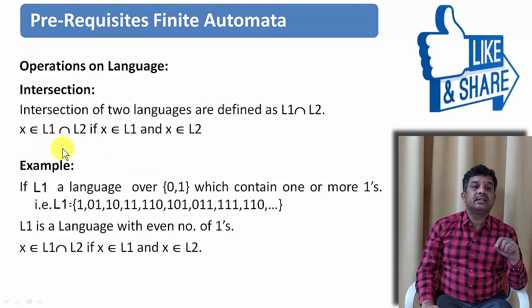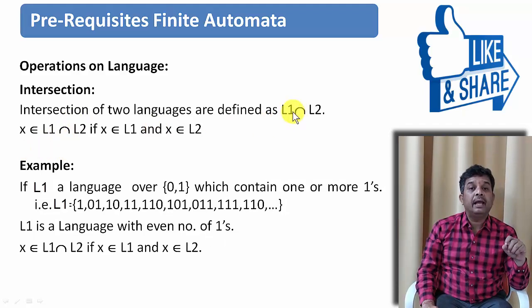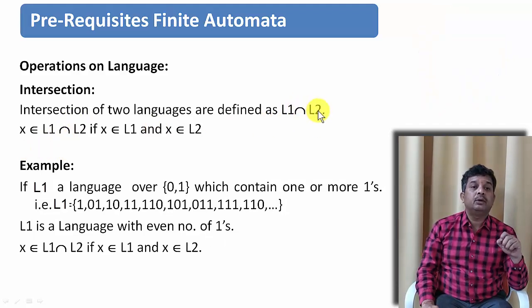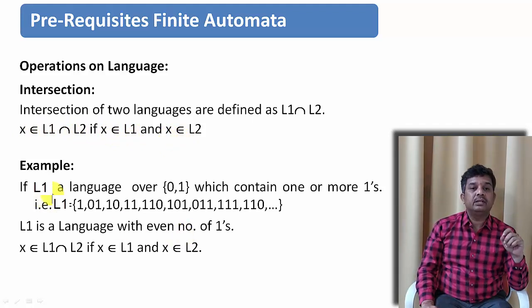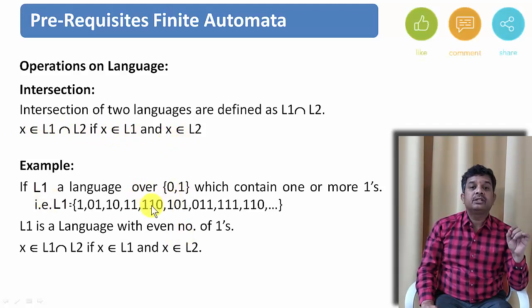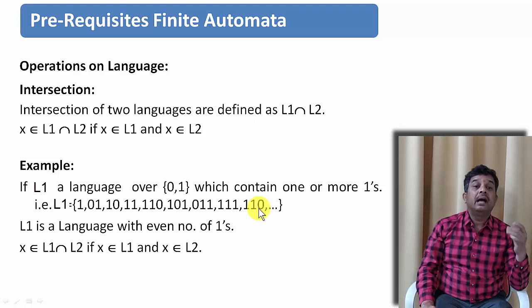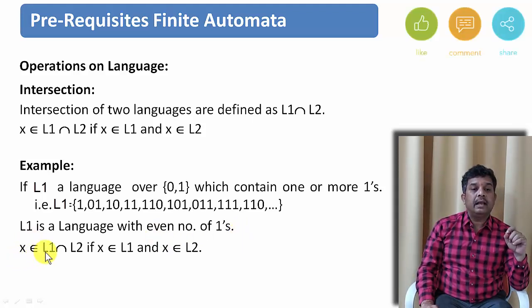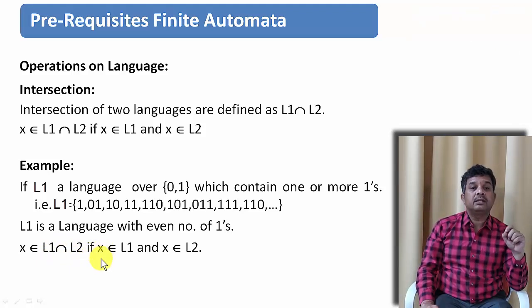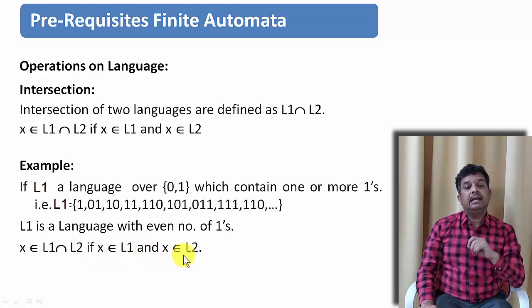The next operation is intersection. The intersection of two languages L1 and L2 is defined such that if x belongs to L1 intersection L2, then x must be in L1 as well as in L2. For example, if a language contains strings with one or more 1's, and L1 is another language containing strings with an even number of 1's, then L1 intersection L2 contains only strings that satisfy both conditions — belonging to both L1 and L2.